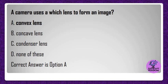A camera uses which lens to form an image? A) Convex lens, B) Concave lens, C) Condenser lens, D) None of these. Correct answer is option A.